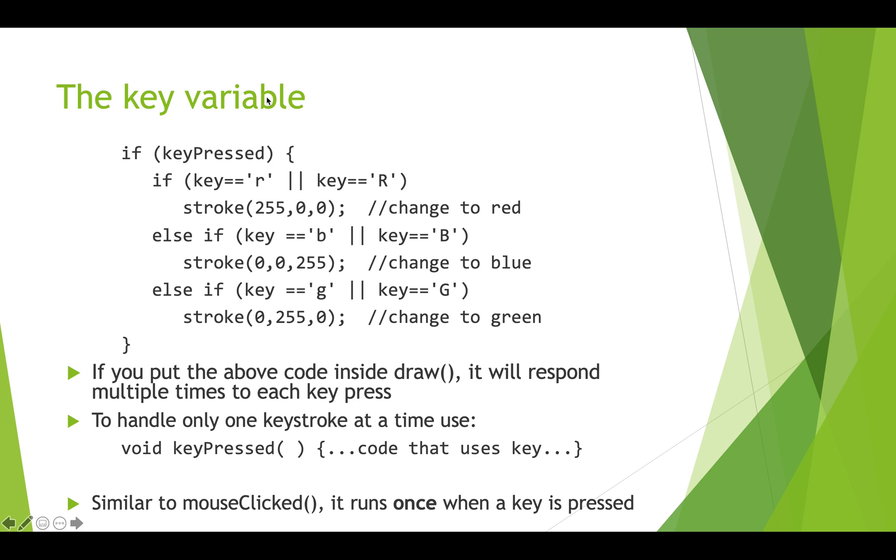It's important to note that this construct here, if you put this inside draw, it's going to respond multiple times to each key press because when a user presses a key on a keyboard they don't press it for a 60th of a second, they hold it down for maybe a tenth of a second. So that could have this called 10 times inside draw and you'd be repeatedly setting the stroke color to red because the person had let their finger linger on the r key just for a tenth of a second.